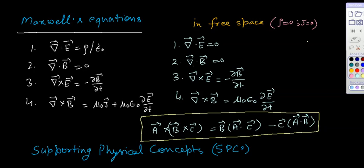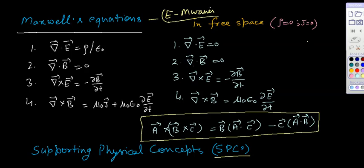Good morning friends. In this video I will discuss about the Maxwell equations and how one can use them for electromagnetic waves. Maxwell equations are used as supporting physical concepts to derive the electromagnetic waves. The target is to derive the relationship for electromagnetic waves by using Maxwell equations, which are the supporting physical concepts required for this purpose.